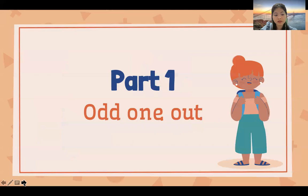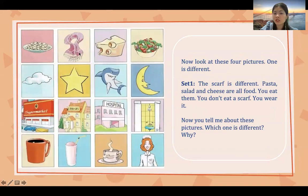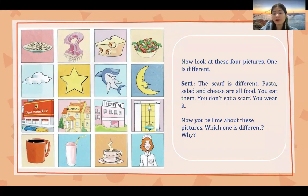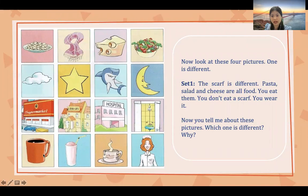Okay, now task number two. Cambridge Movers part one. You will do the odd one out. Look at these four pictures. In set number one, the star is different because pasta, salad, and cheese are all food — you eat them, and you don't eat a star. Now look at sets number two, three, and four and tell me about the different pictures and why.